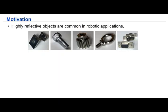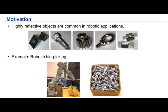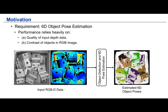Reflective objects are quite common in robotic applications. As one example, in robotic bin picking, the goal is to have a vision-guided robot pick up these textureless, shiny objects from a cluttered bin. To achieve this goal, 6D object poses are often required prior to robot grasping, and reliable 6D object pose estimation generally requires good contrast of objects in RGB images and high quality depth data.